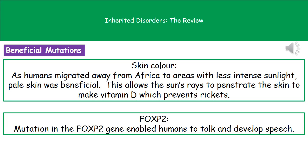However, as humans migrated away from Africa to areas with less intense sunlight, dark skin was not such a benefit. In fact, having paler skin was more beneficial, because pale skin allows the sun's rays to penetrate and make vitamin D. We need vitamin D to prevent a condition called rickets, which leads to the bones becoming softer and bowing in the legs.